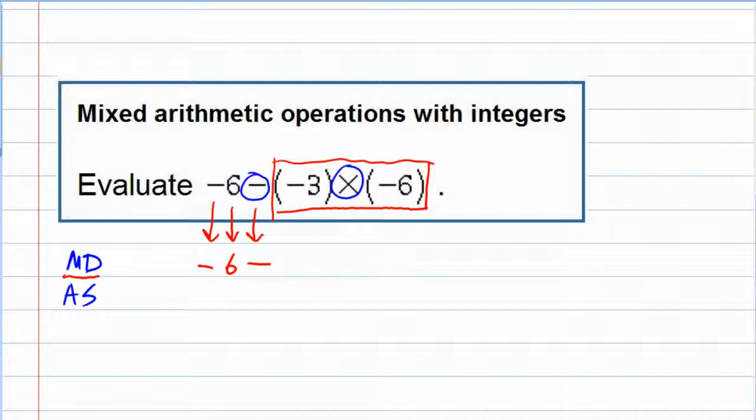So negative six times negative three, if we remember back to multiplying integers, when the signs are the same, our result is positive. So a negative three times a negative six, they have the same sign, we're actually going to get a positive 18. And that's what I would write down right below it.